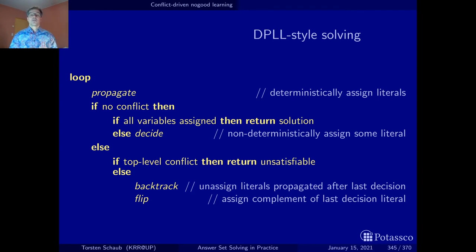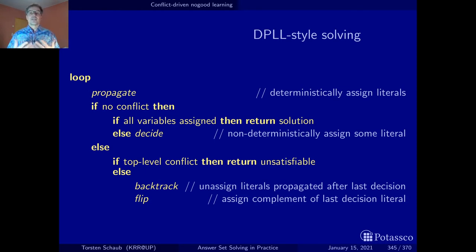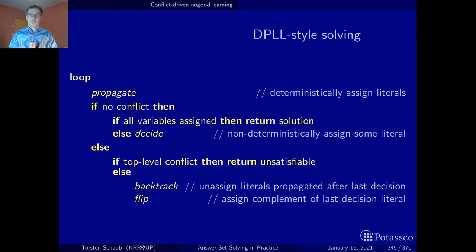We loop until the problem has been found unsatisfiable or we got a solution. When we enter the loop, as is standard in constraint processing algorithms, we propagate - we try to deterministically assign truth values to variables. In our case this is mainly unit propagation, assigning truth values to variables which can be atoms or bodies.